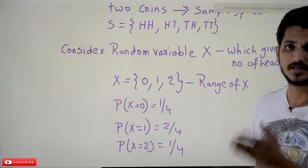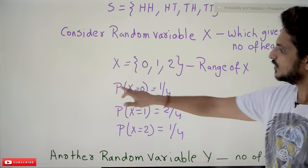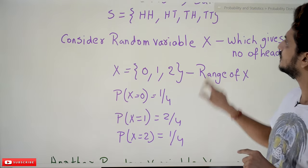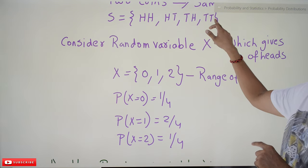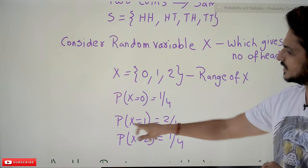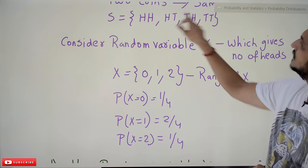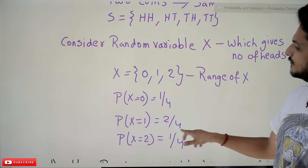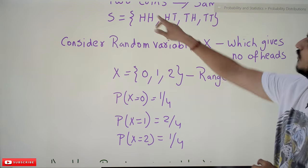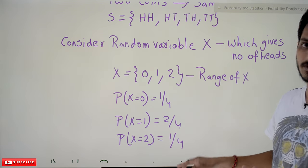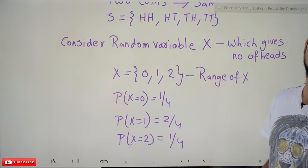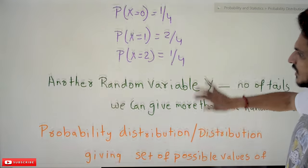Probability of X = 0 means 0 heads, which is tail-tail, so the probability is 1/4. Probability of X = 1 means one head — there are two possibilities, so the probability is 2/4. Probability of X = 2 means two heads, so the probability is 1/4. This is how we find the probability values for the random variable X.